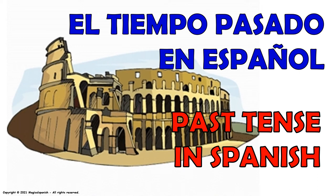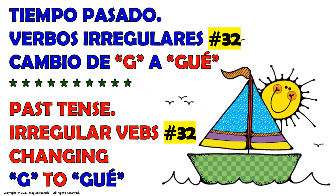El tiempo pasado en español. Tiempo pasado, verbos irregulares, video número 32. Cambio de G a GU.